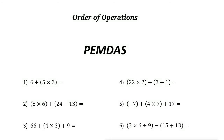Order of operations: in some math problems, when you have more than one operation — math operations are for example addition, subtraction, multiplication, and division — you need to know which one to solve first. For example, here number one: it is six plus parentheses five times three.